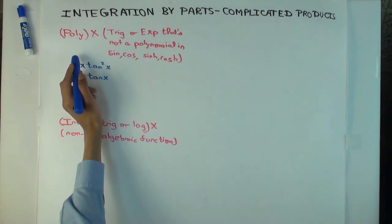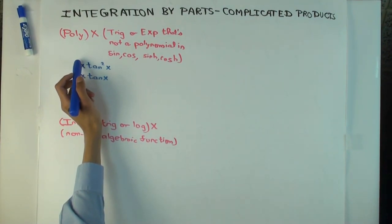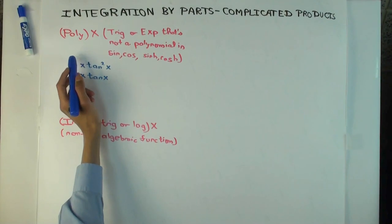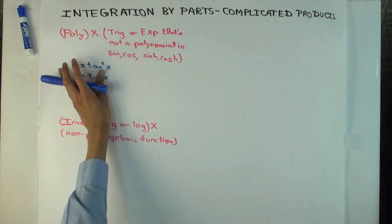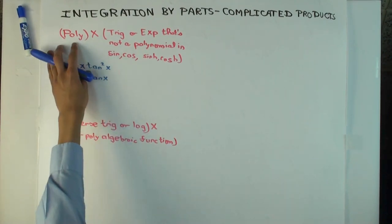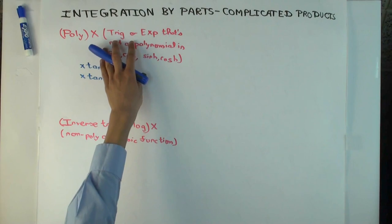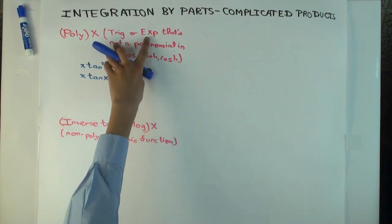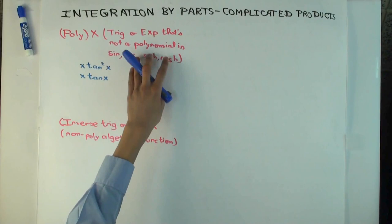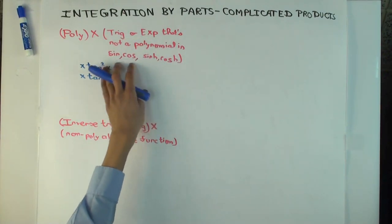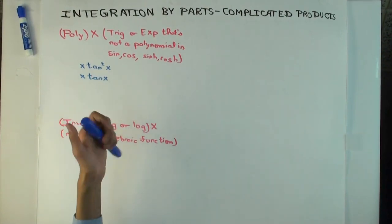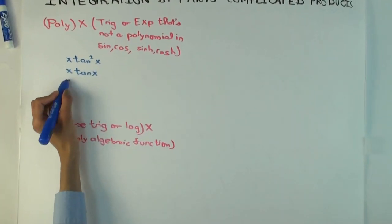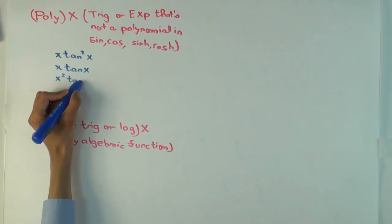In this talk, I'm going to consider integration by parts applied to some products which are a little more complicated, a little more subtle than what we've been seeing so far. We're doing polynomial times trigonometric or exponential, but not the ones which are just sine, cosine, or sinh, cosh — we're doing ones which are not polynomials in these. So we're doing things like x·tan²x, or x·tan x, or x²·tan²x — these kinds of things.